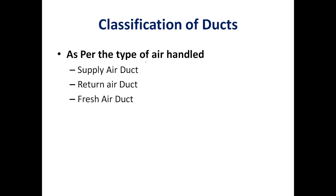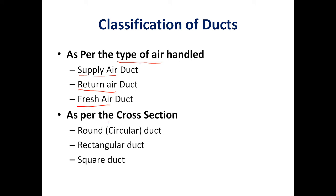Now let us see the classification of ducts. The first basis of classification is the type of air handled. There are three types: supply air duct, return air duct, and fresh air duct. The supply air duct carries air from the air handling unit to the room, the return air duct recirculates air from the room back to the AHU, and the fresh air duct supplies outside air in a certain percentage to the AHU.